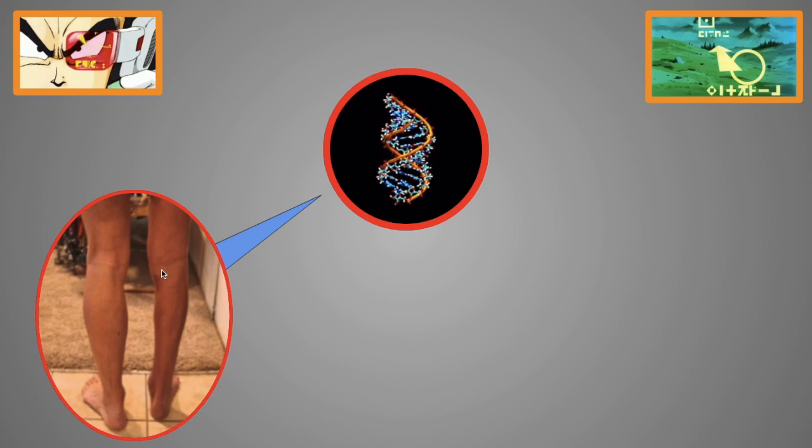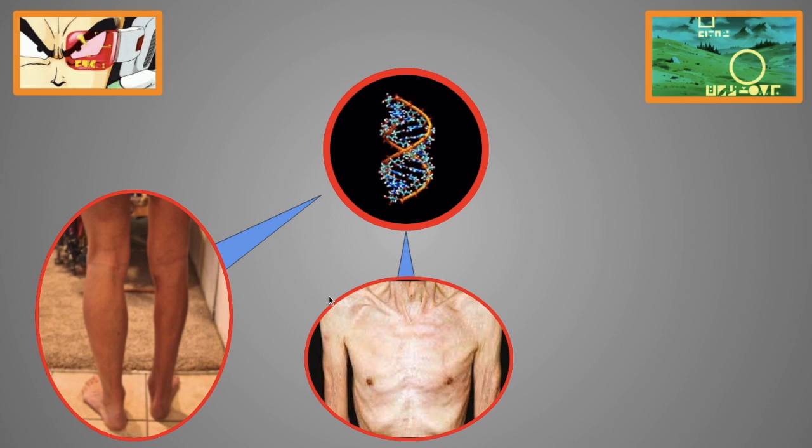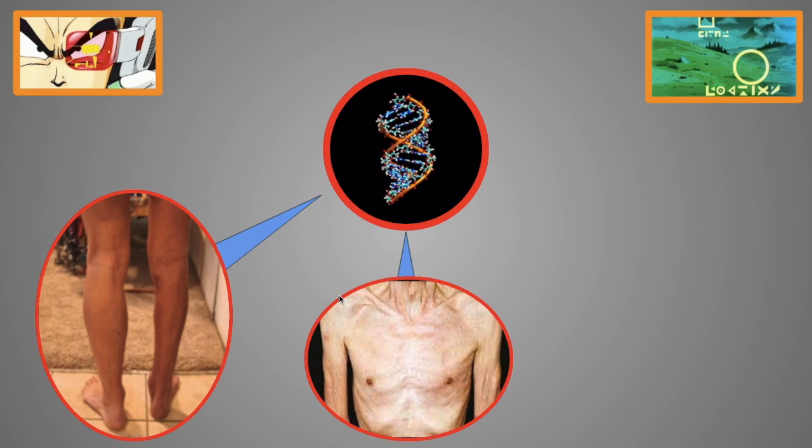Here are some examples of what happens when your myostatin levels are too high. For example, the reason why your legs shrink when you put them in a cast or you immobilize for a long time is because myostatin levels go up.